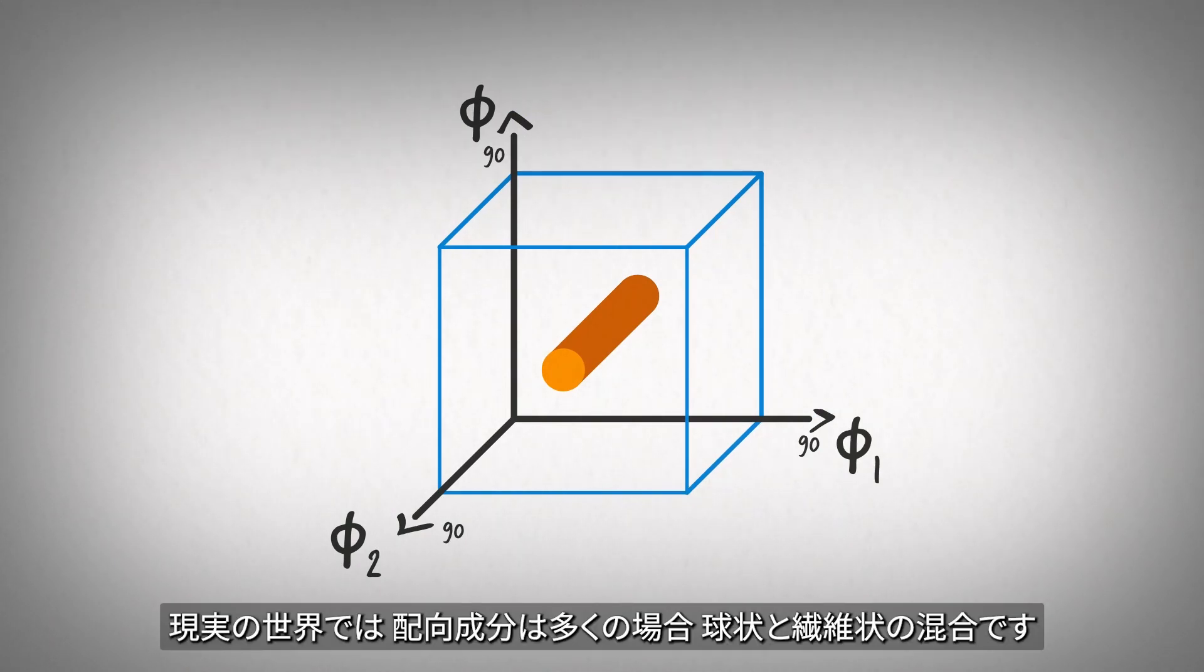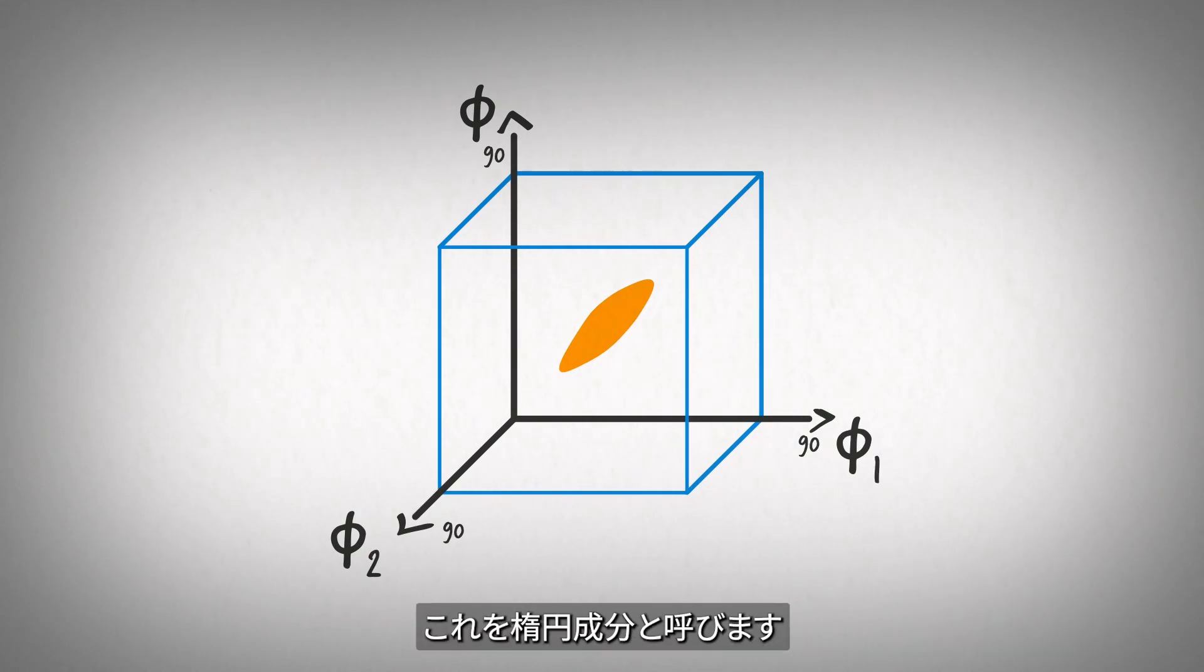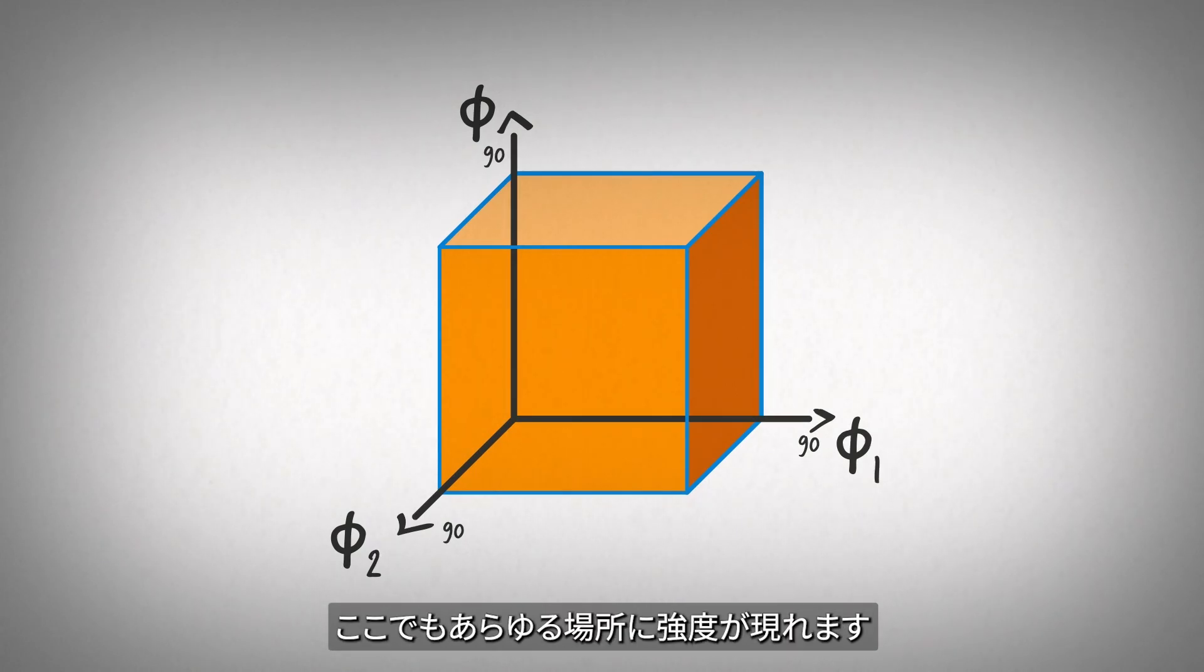In the real world, orientation components are often a mixture between spherical and fiber, known as an elliptical component. The last case was isotropic, where again it corresponds to intensity everywhere.